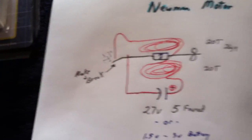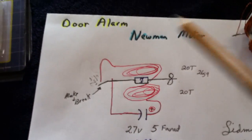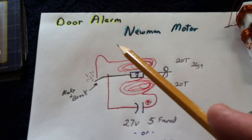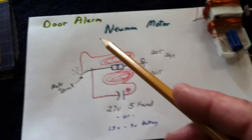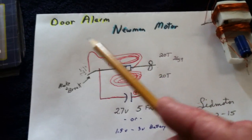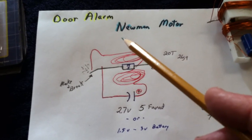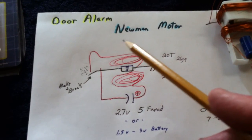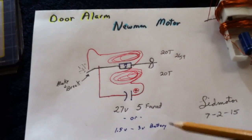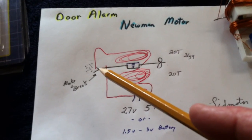And what it is, is this is a very, very simple electric motor that Joseph Newman became famous for, very controversial, but it's an excellent starter project for people interested in building electric motors. And it's extremely simple.